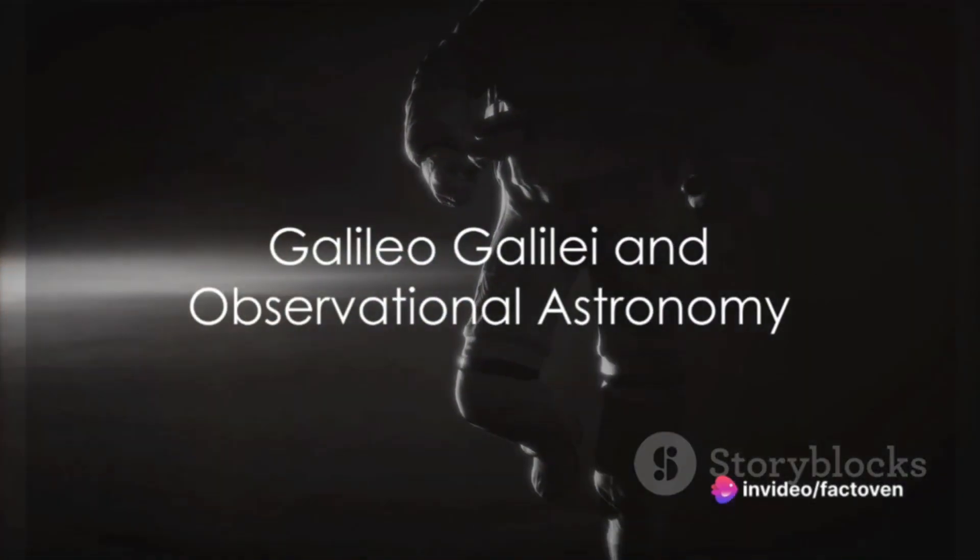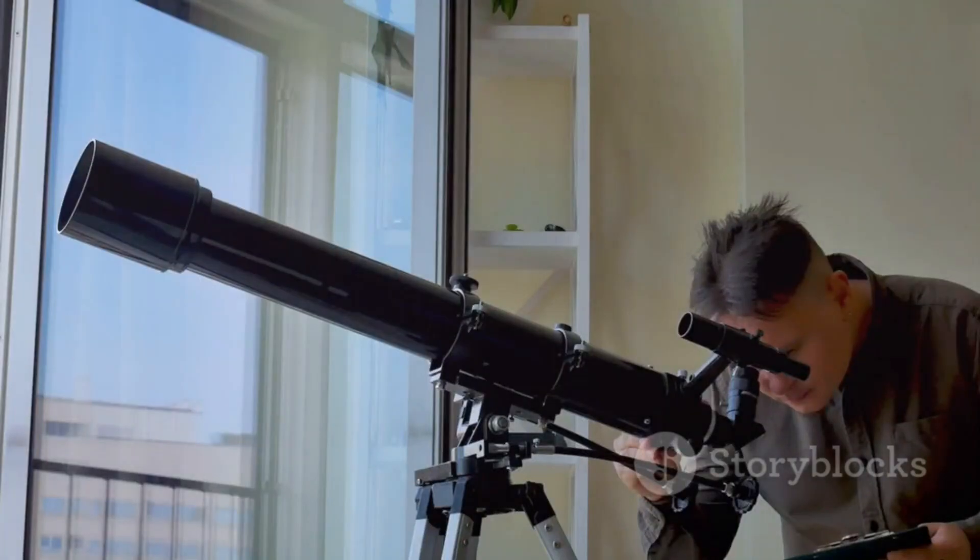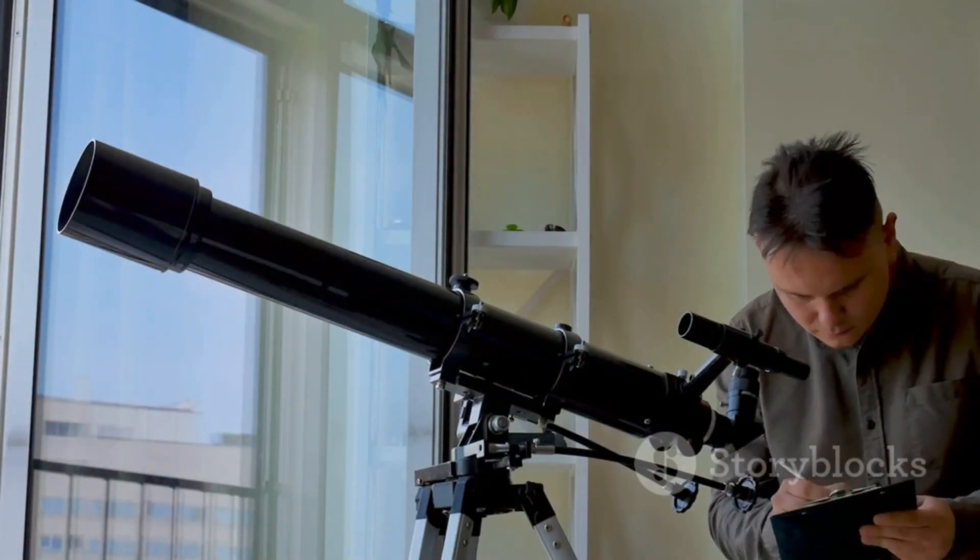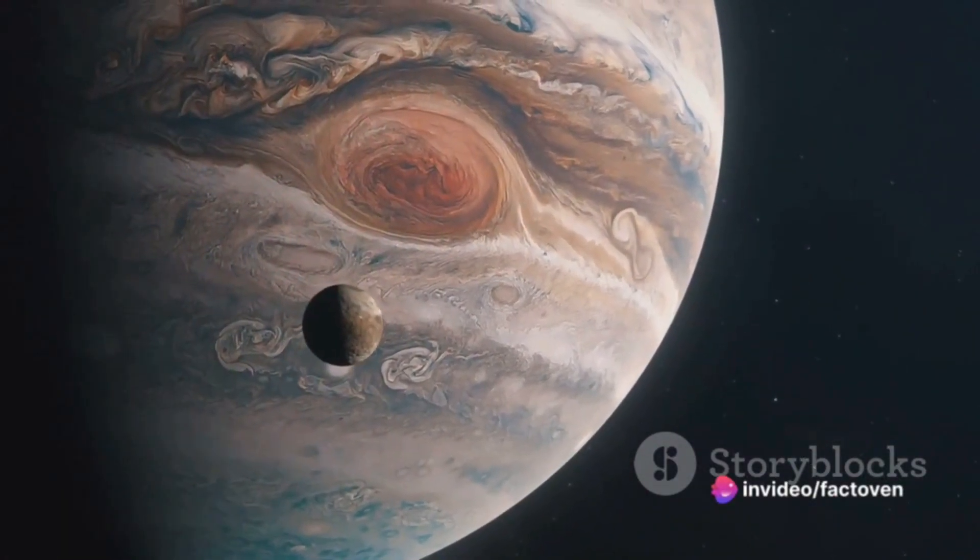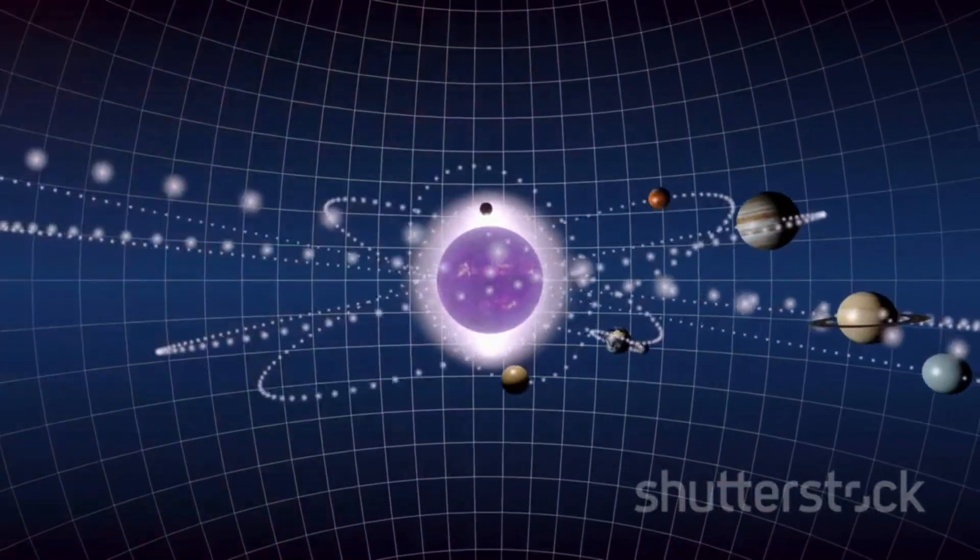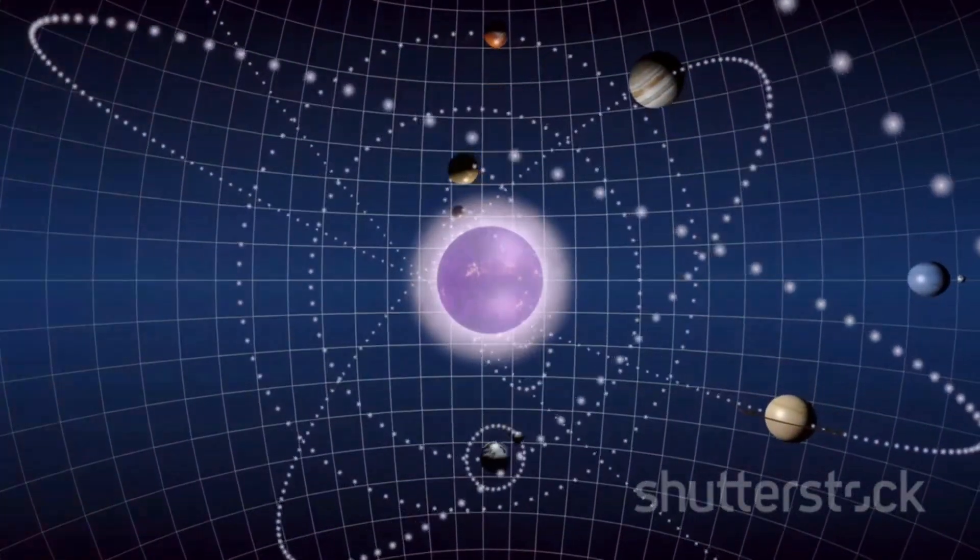Galileo Galilei, the father of observational astronomy, also made significant contributions. He championed the heliocentric model, using his telescope to make observations that supported it. He discovered moons orbiting Jupiter, proving that not all celestial bodies revolved around the Earth, and observed the phases of Venus, which could only be explained if Venus orbited the Sun, not the Earth.